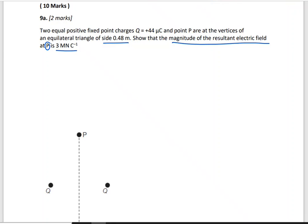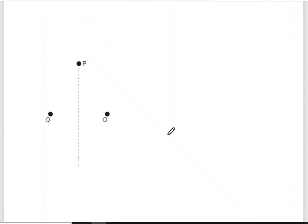We know the electric field is a vector quantity. It's the electric force over the charge, and from Coulomb's law it equals k times the charge divided by r squared, where k is Coulomb's constant. Since both charges are positive, we imagine there is a small positive test charge at point B to determine the direction of the electric field from each charge. This is charge one and this is charge two.